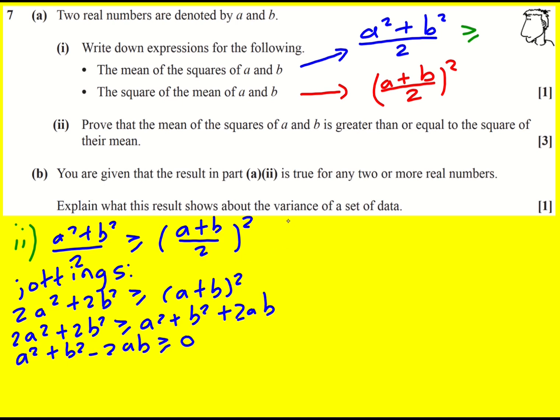Now this looks an awful lot like what I had when I had a plus b all squared, except I've got a minus 2ab, so it's going to be a minus b all squared. And this is true.